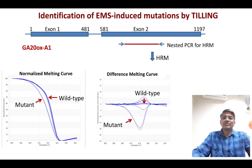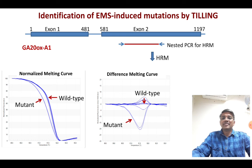We have also established a platform to obtain EMS-induced mutants in wheat and their detection by TILLING. We are using this approach to develop a new semi-dwarf wheat with improved early vigor suitable for conservation agriculture.